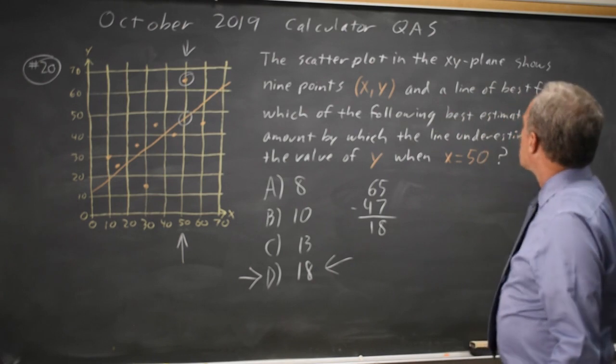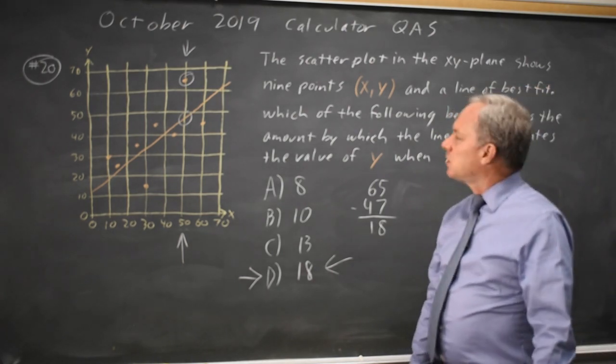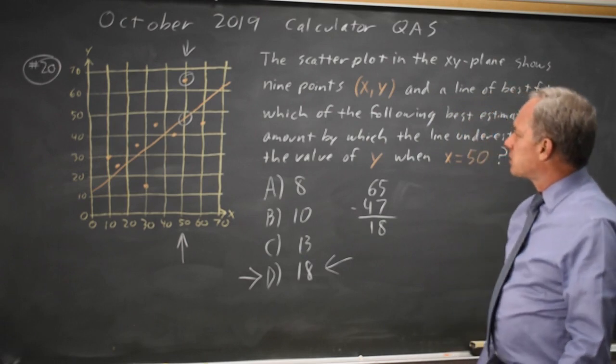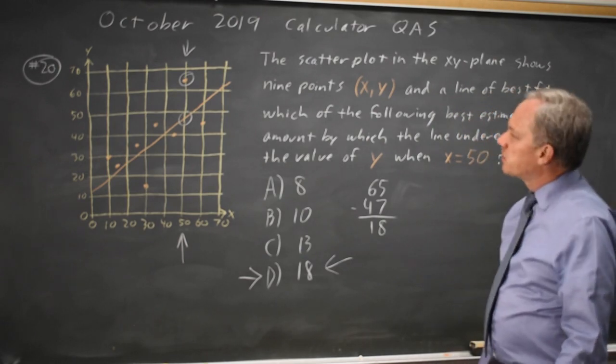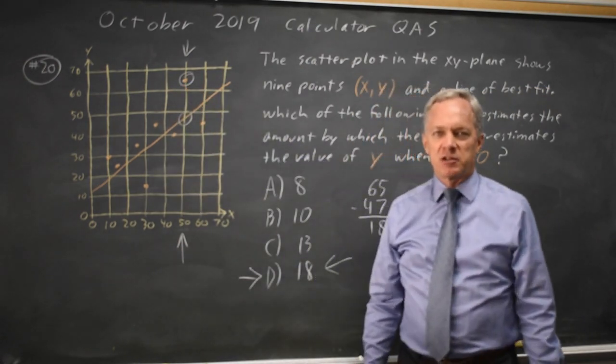We don't have to worry about whether this is plus or minus, because our only choices are positive, and underestimating means the line is under the actual value, so that is the amount that we underestimate by.